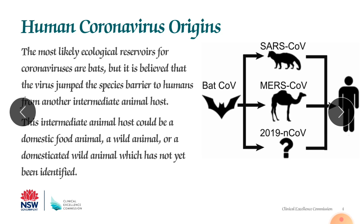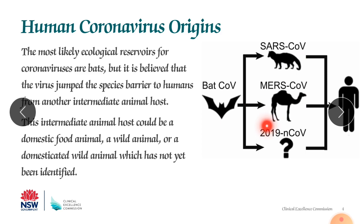The most likely ecological reservoirs for coronaviruses are bats. It is believed the virus jumped the species barrier to humans from another intermediate animal host. This intermediate host could be a domestic food animal, a wild animal, or a domesticated wild animal, which has not yet been identified. For COVID-19 specifically, it may be the civet, camel, bats, or snakes — but this has not yet been finalized.